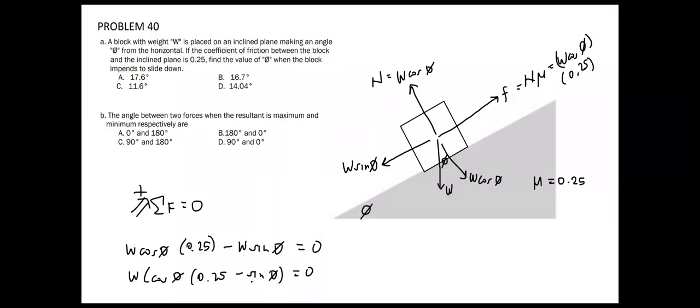We can divide both sides by W, so this basically cancels out. And then we can add both sides by sine of phi.